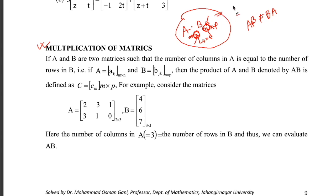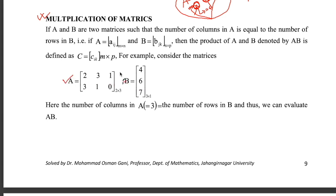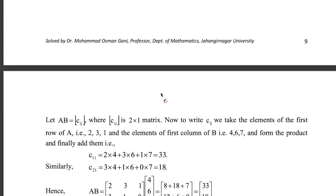The resultant matrix of AB will be of order m×p. For example, if A has three columns and B has three rows, you can multiply them and the result AB will be of order m×p.